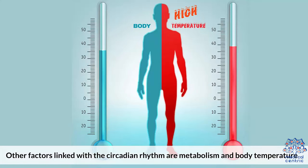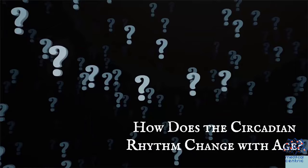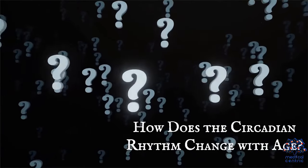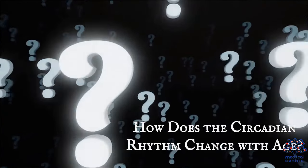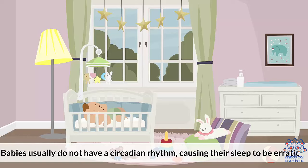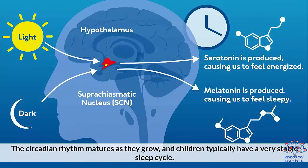Other factors linked with the circadian rhythm are the metabolism and body temperature. How does the circadian rhythm change with age? Babies usually do not have a circadian rhythm, causing their sleep to be erratic. The circadian rhythm matures as they grow, and children typically have a very stable sleep cycle.